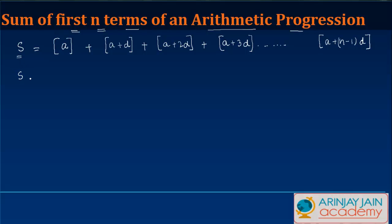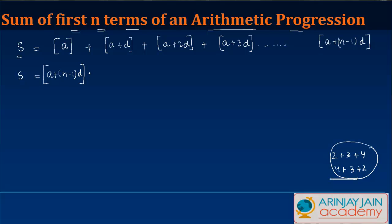I need to find out what the value of this sum is. Can I write this in the reverse order? We know that 2 plus 3 plus 4 is equal to 4 plus 3 plus 2. So if I write this in the reverse order, I get: a plus n minus 1 times d, plus a plus n minus 2 times d, and so on, and towards the end you would get plus a.